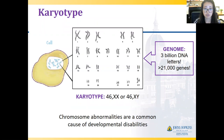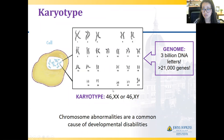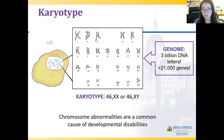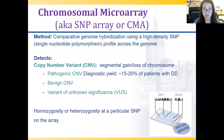Karyotypes are still sometimes used in clinical practice. It's a picture of your chromosomes using G-banding staining. You can detect aneuploidy — for example, an extra chromosome 21 in Down syndrome — as well as smaller deletions, duplications, or structural variations like a ring chromosome. However, in almost all cases, especially in pediatric practice, we're now using a chromosome microarray instead of a karyotype.